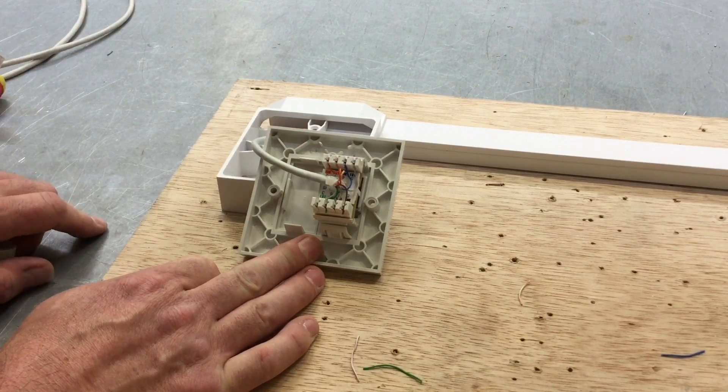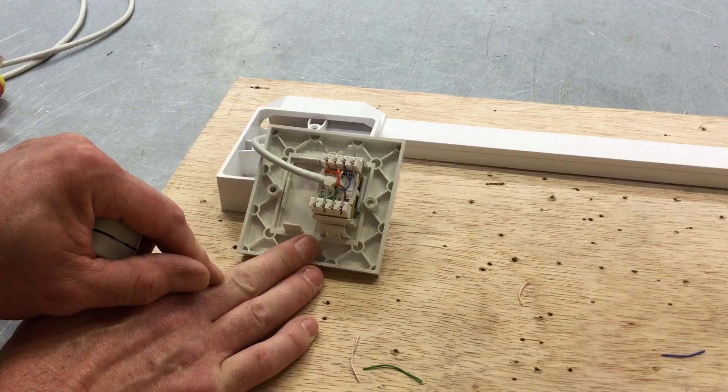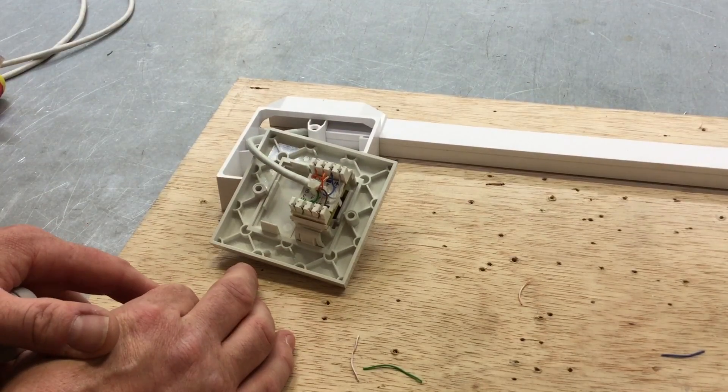That looked relatively tricky for an easy job. So connections are in, cables are really short. Been told that by a BT engineer to keep those really short. Faceplate can go back on and then we can perform the test to prove we've got continuity of the conductors and that they're in the correct sequence.